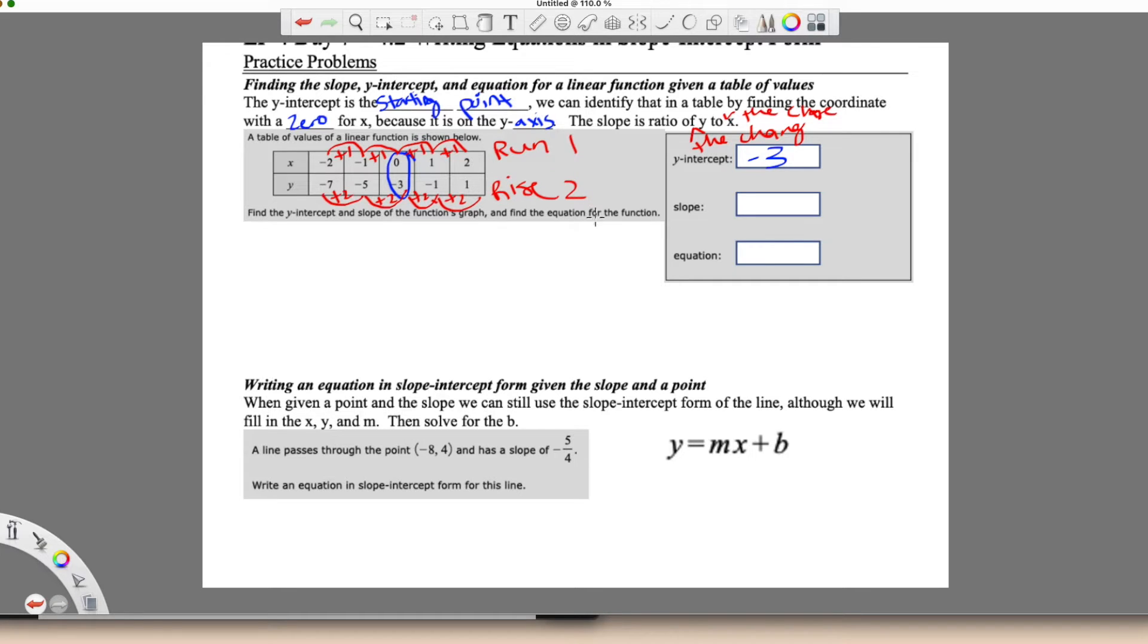And remember slope is rise over run like this. So make sure you put it in the correct order. So it's going to be rise over run, which would be two over one, which we can just write as two. You don't need to write two over one.